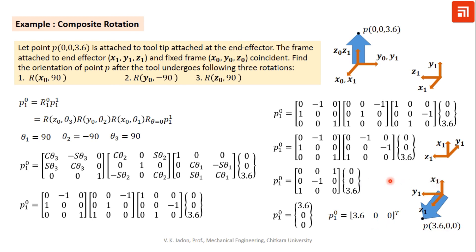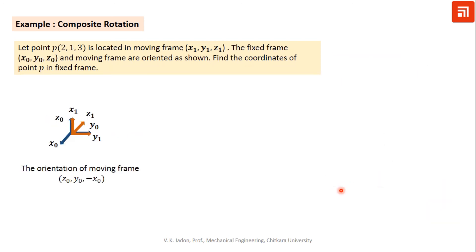This should build your concept for composite rotation — how rotation is taking place, how frames change orientation, and how we understand frame orientation using rotation matrices. Let us take one more simple example for further concept building. Point P is located in moving frame x1 y1 z1. The fixed frame x0 y0 z0 and moving frame are oriented as shown in the figure. Find the coordinate of point P in the fixed frame.